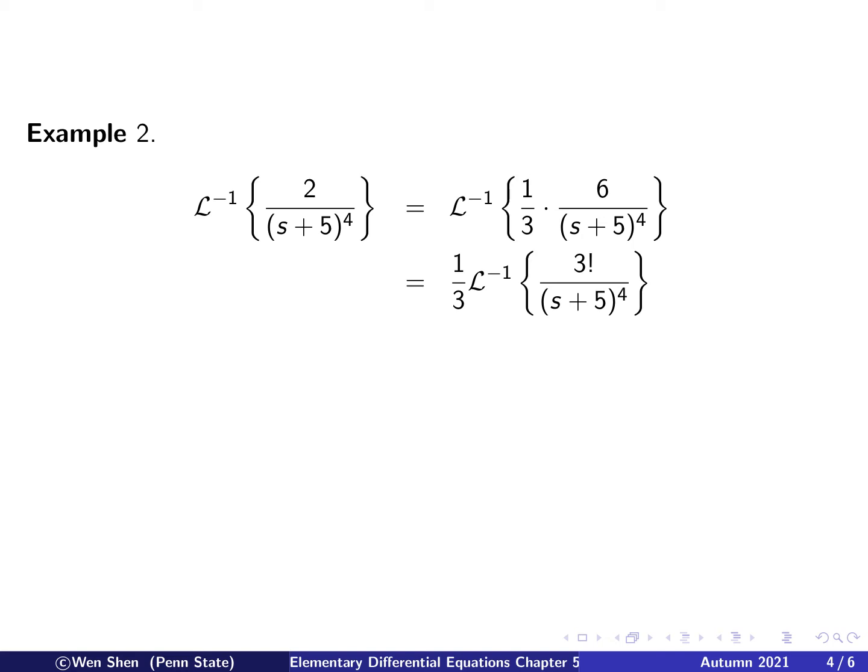So next apply the linear property. I'll take out 1/3 outside. I'll look for inverse transform of this. Now I write 6 as 3 factorial. So I know that this one looks good now.